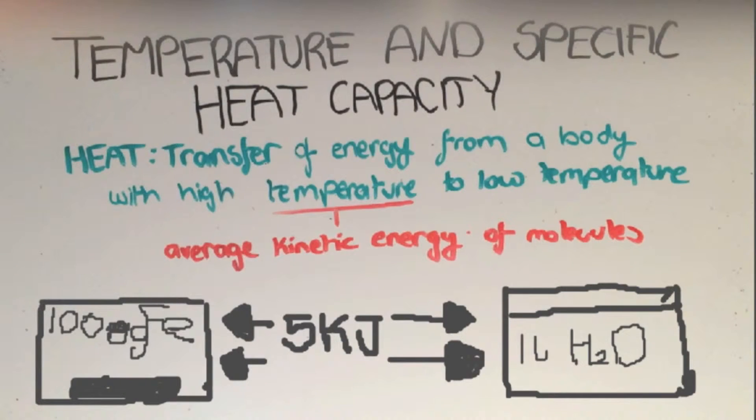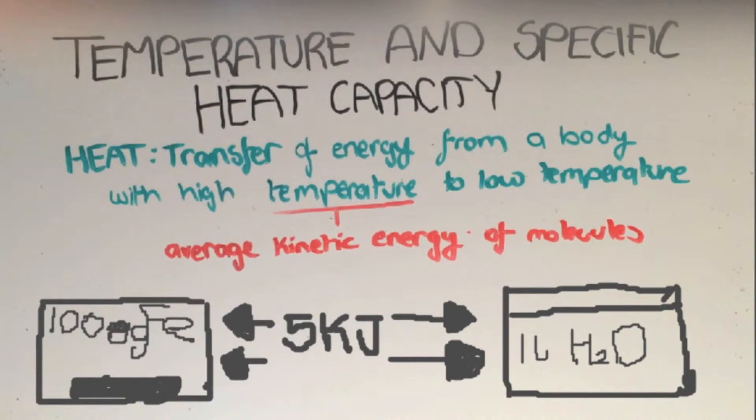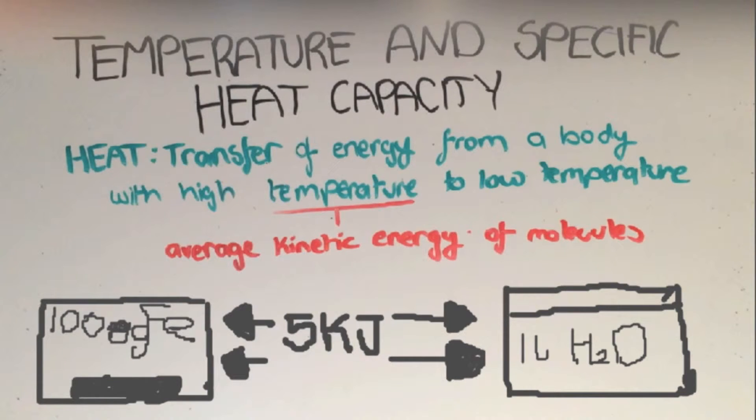So, let's say that I've got two containers. The first container contains 1 kilogram of iron, and the second container contains 1 kilogram of water. And I'll give them both 5,000 joules of thermal energy. Which one do you think will have a faster rise of temperature? Yes, it is iron. But why?